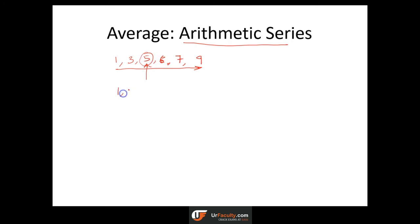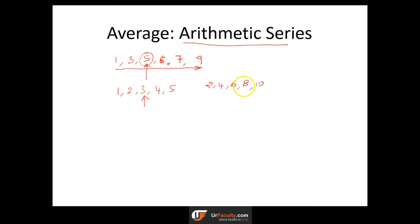Let's take another example: 1, 2, 3, 4, 5. There are 5 numbers, so take the central number — that's the average, which is 3. Next: 2, 4, 6, 8, 10. The average is straightforwardly the middle number, which is 6.